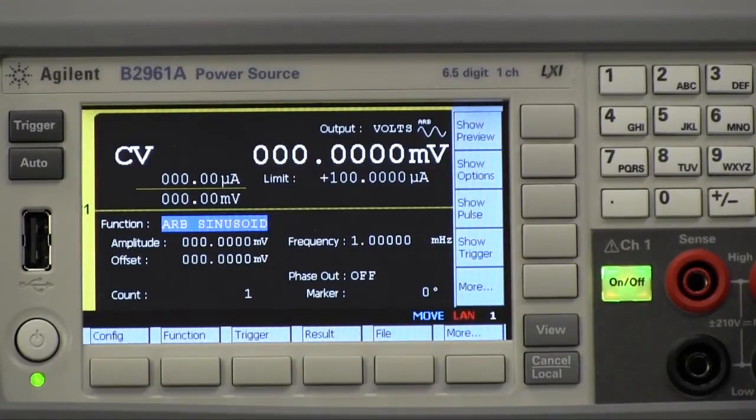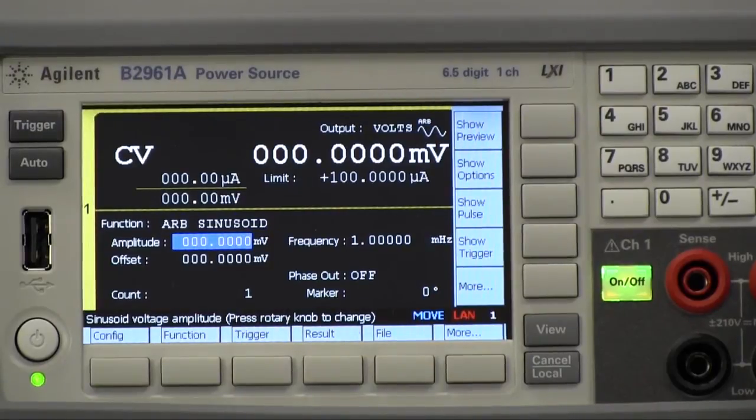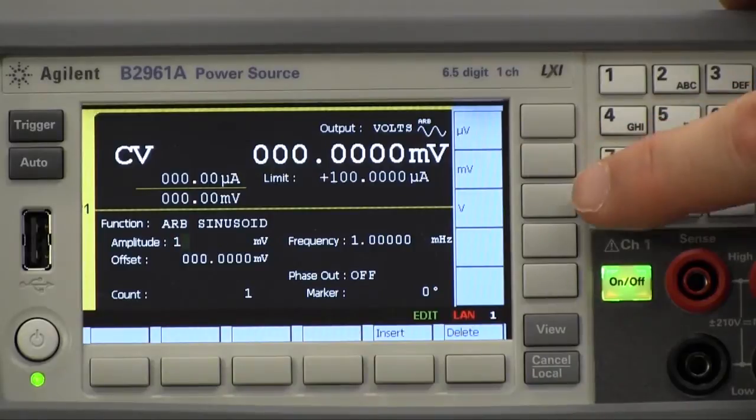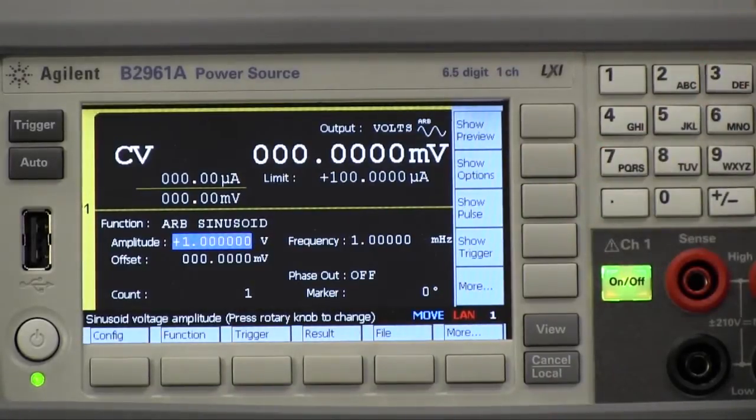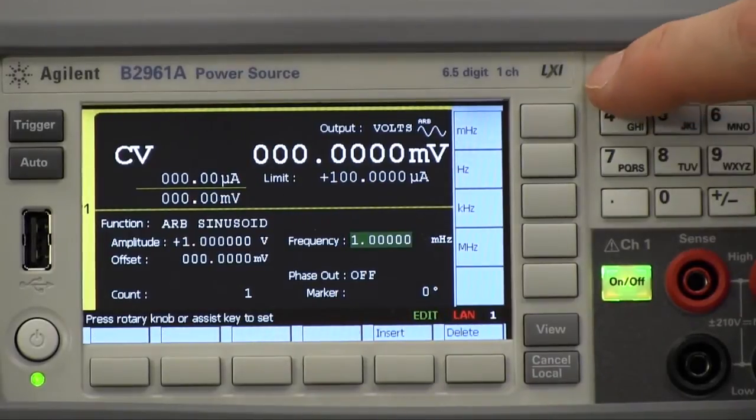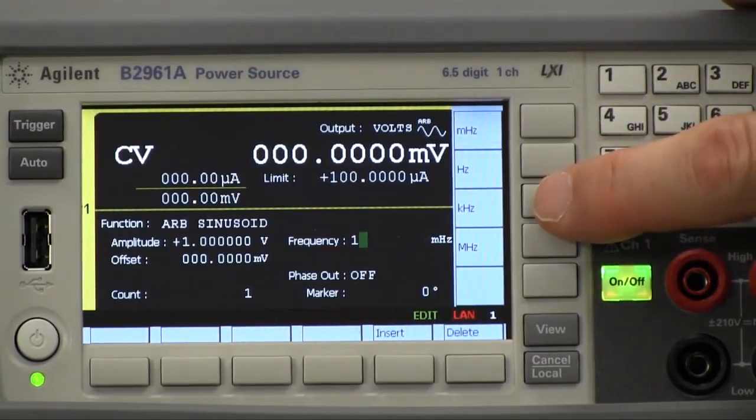So I'm going to go ahead and set up a sinusoid waveform. Let's move down and make the amplitude for this demo 1 volt and I'm going to move over here to the frequency and set this to be 1 kilohertz.